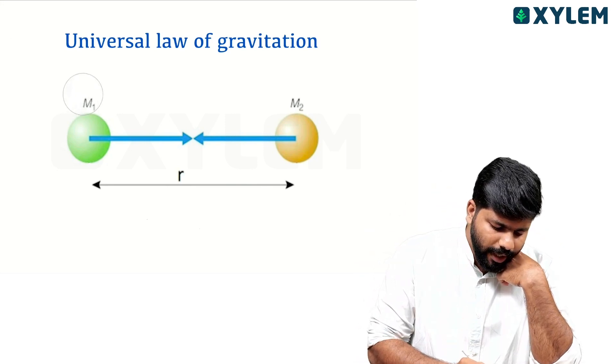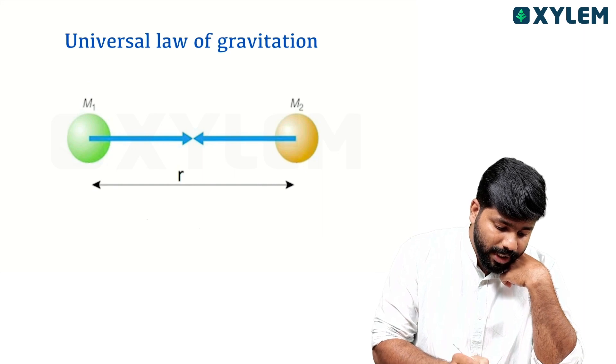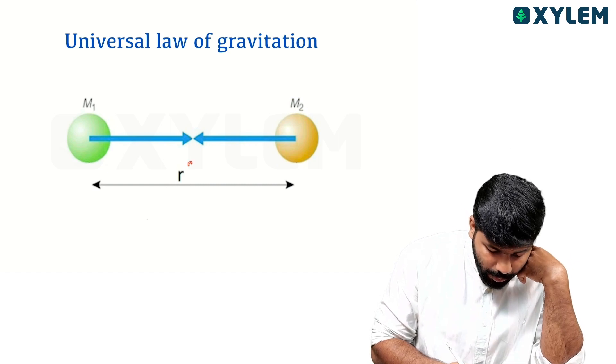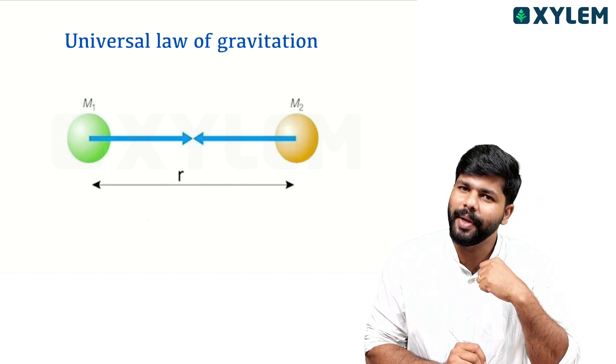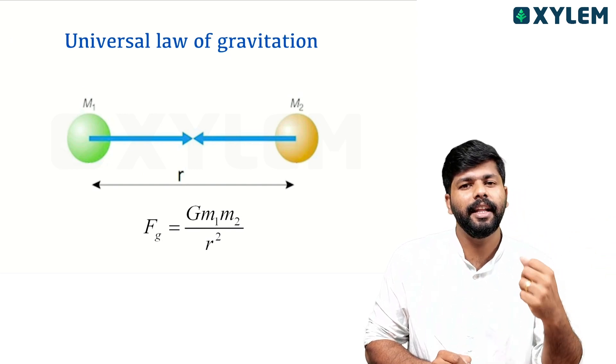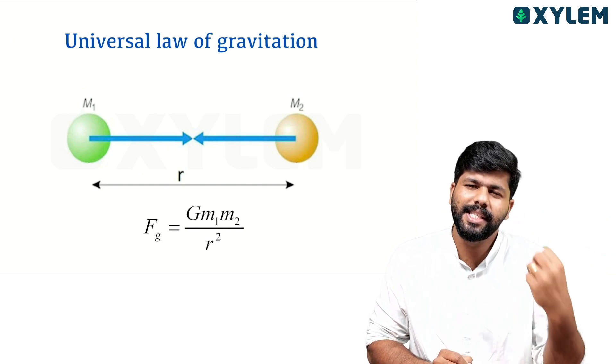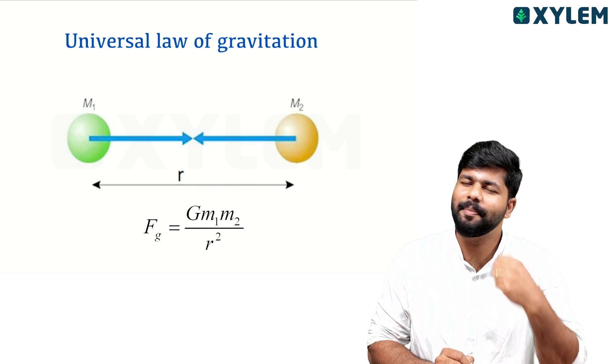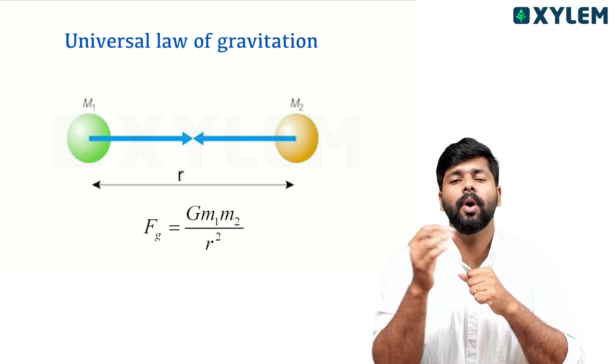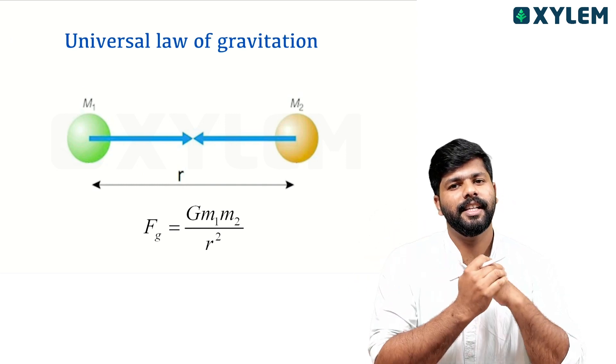The force is directly proportional to the product of their masses, M1 and M2, and inversely proportional to the square of distance between them. Converting proportionality to an equation: F gravitational equals G times M1 M2 divided by R square. We have a constant called the Universal Gravitational Constant G.